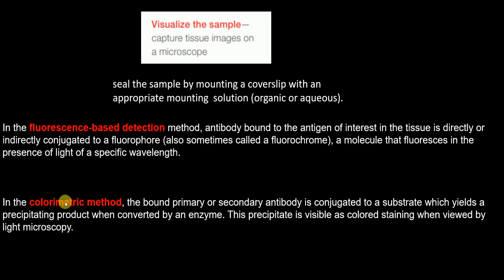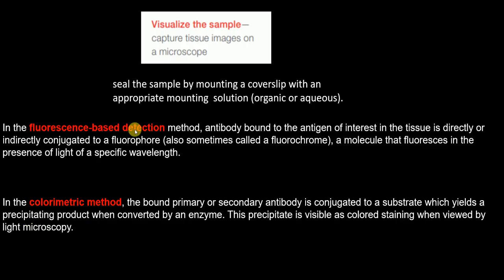The other detection method is colorimetric. In this method, the bound primary or secondary antibody is conjugated to a substrate. These substrates produce a precipitate product when converted by an enzyme, and this precipitate is visible as a colored staining when viewed by light microscopy. So there are two detection methods: fluorescent-based and colorimetric. After detection, the final step is visualization under the microscope. I hope this video was helpful — thank you.